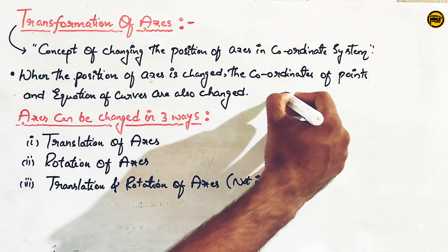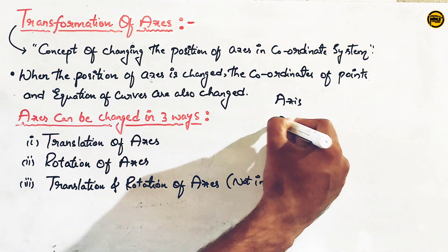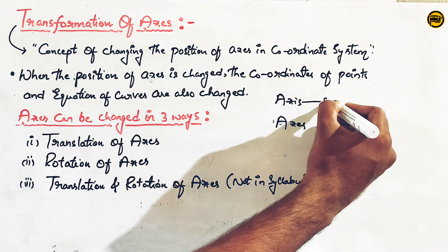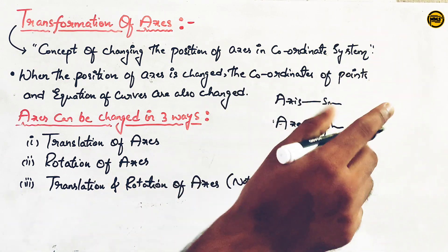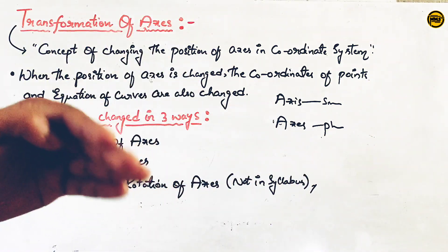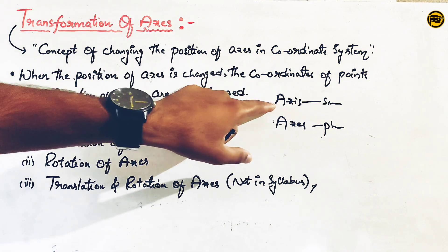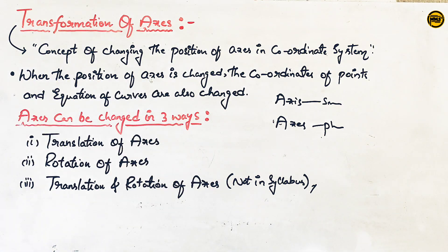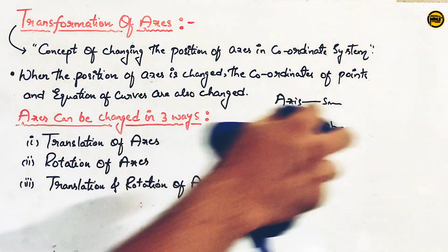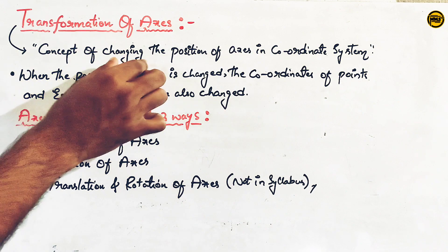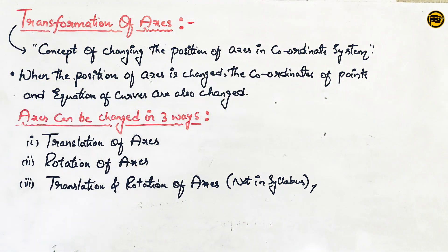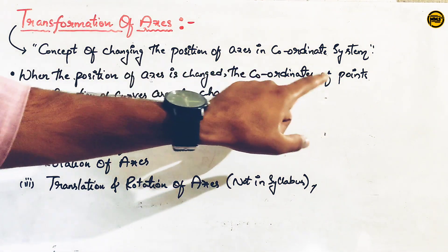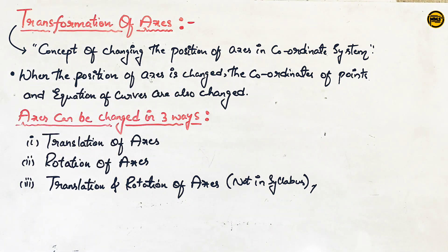Note the words AXIS (singular) and AXES (plural). This is the concept of changing the position of the axis in the coordinate system. When the position of the axis is changed, the coordinates of the point and the equation of the curve are also changed. This is the important point.